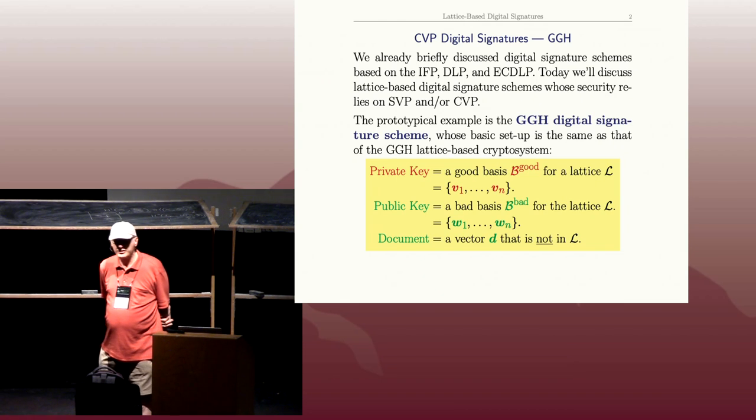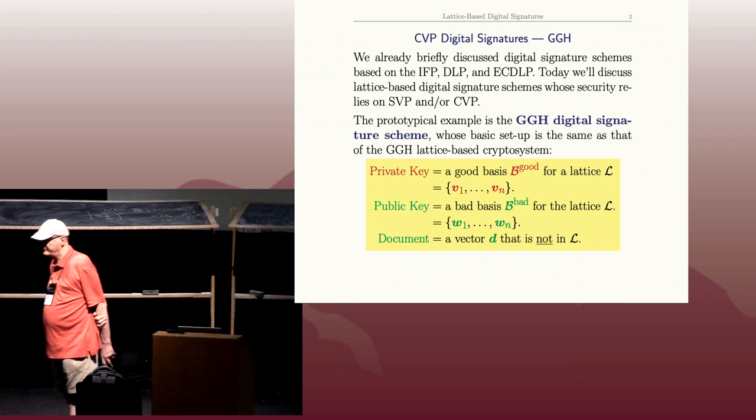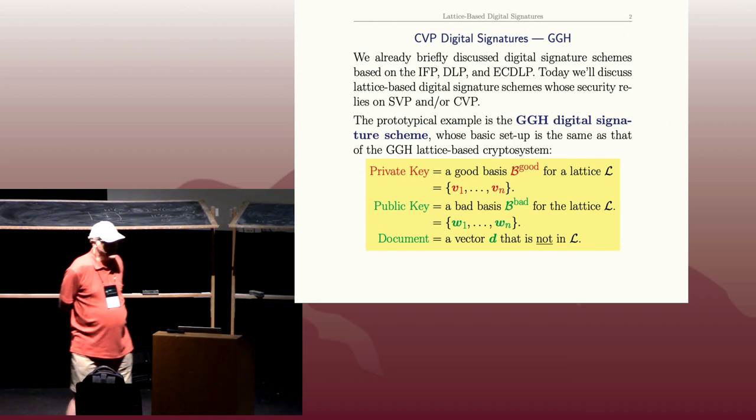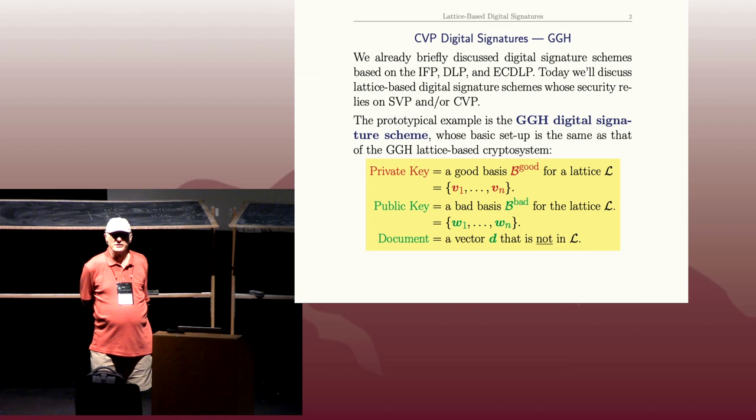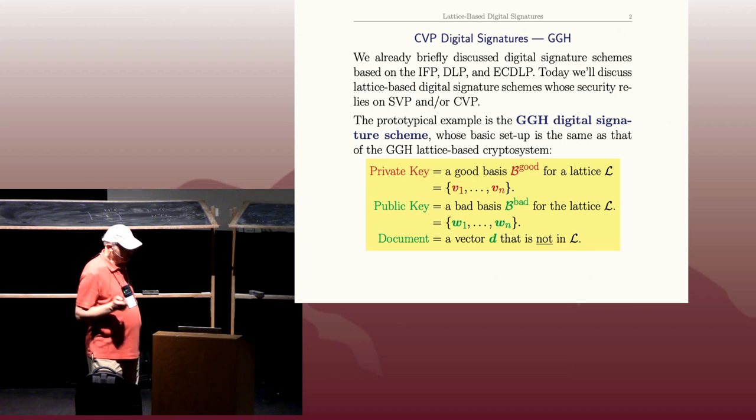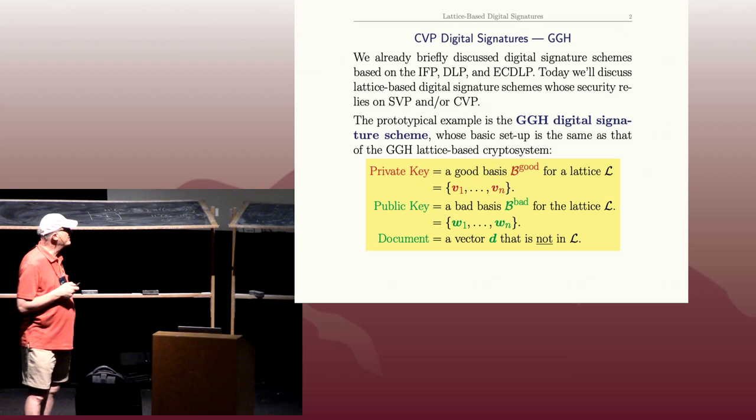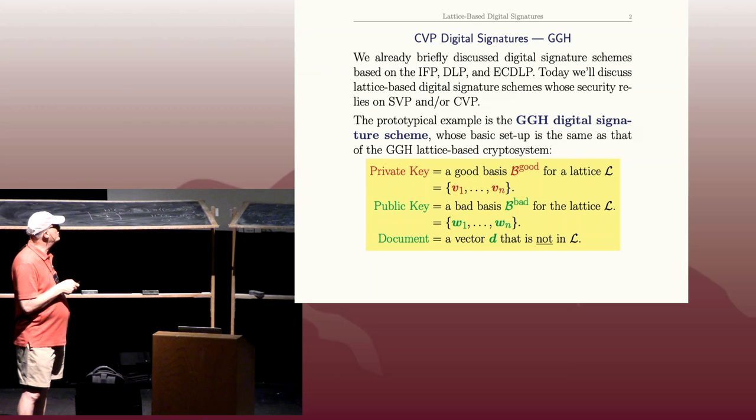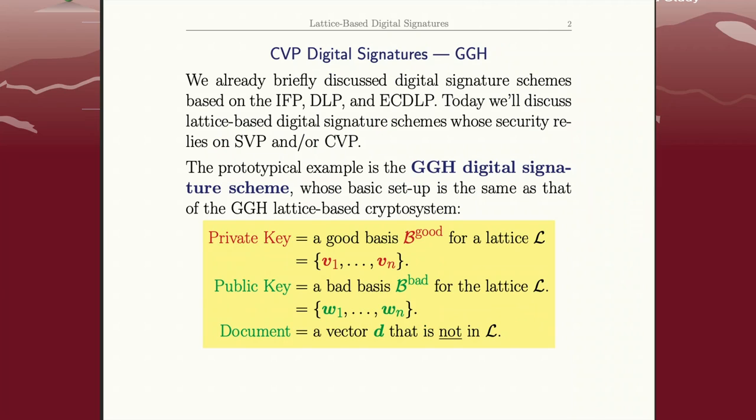The prototypical scheme is the straightforward GGH digital signature. When I talked about digital signatures, I think I didn't mention this, but let's go over it anyway. This is how GGH would work: the private key, Alice's private key, is a good basis for her lattice.